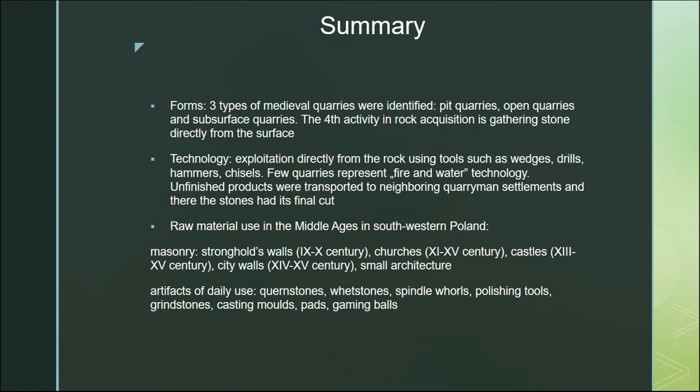We should also remember about surface acquisition — the gathering of stone from the surface. The technology was rather simple, mainly direct exploitation from rock using tools such as wedges, drills, hammers, and chisels, though a few quarries represent fire-and-water technology. Almost all quarries have settlement workshops in their immediate neighbourhood. Raw material in the Middle Ages was used both for architecture and for small finds such as quernstones, whetstones, spill holes, polishing tools, grindstones, custom mounts, pads, and gaming balls. The form of these small finds differs between the early Middle Ages and the High Middle Ages.